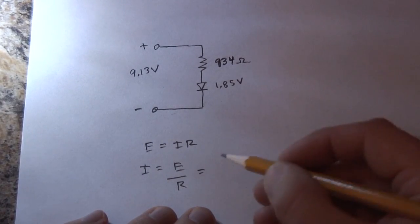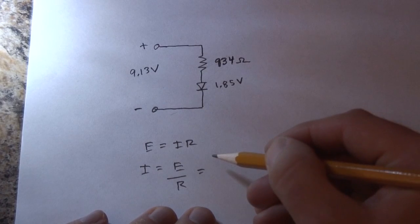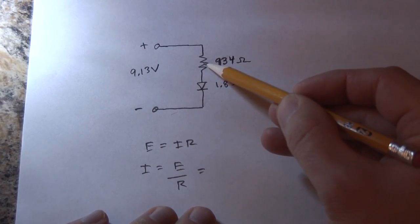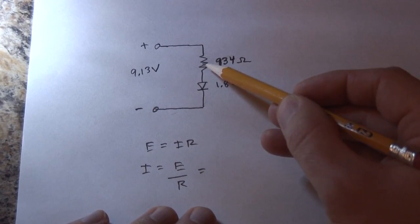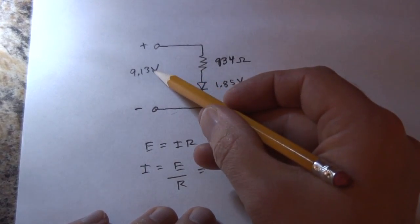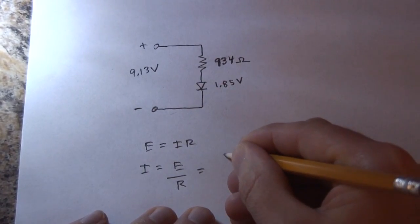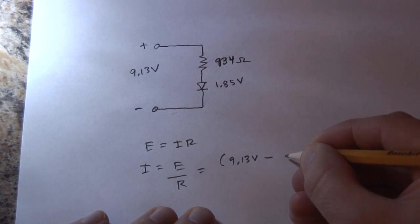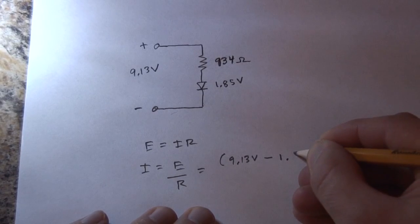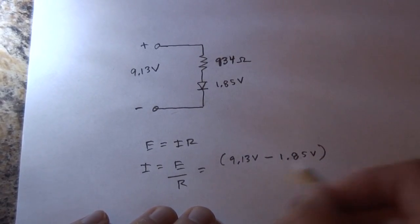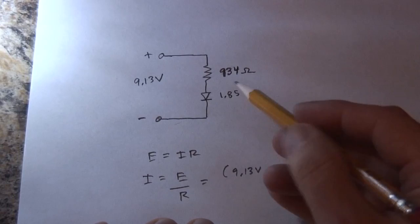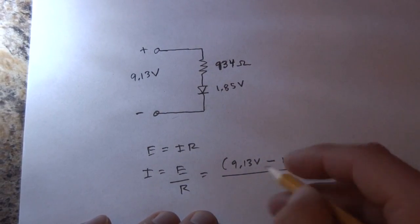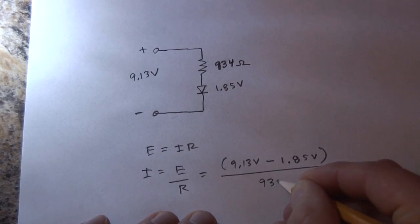So the voltage across the resistor is the difference between the battery and the LED. The voltage that's left from the subtraction is the voltage across the resistor. And we know that R is 934 ohms.